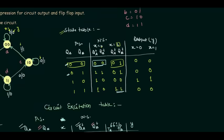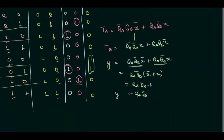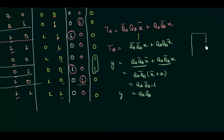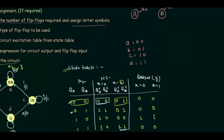Step number nine is the implementation of the circuit. Using these expressions you can easily implement the circuit. You need two T flip-flops — flip-flop A with input TA and output QA, and flip-flop B with input TB and output QB. You also implement the output Y. You will use three-input AND gates and OR gates to implement TA and TB, and a two-input AND gate for Y. These are the nine steps required for the implementation of clocked sequential circuits.